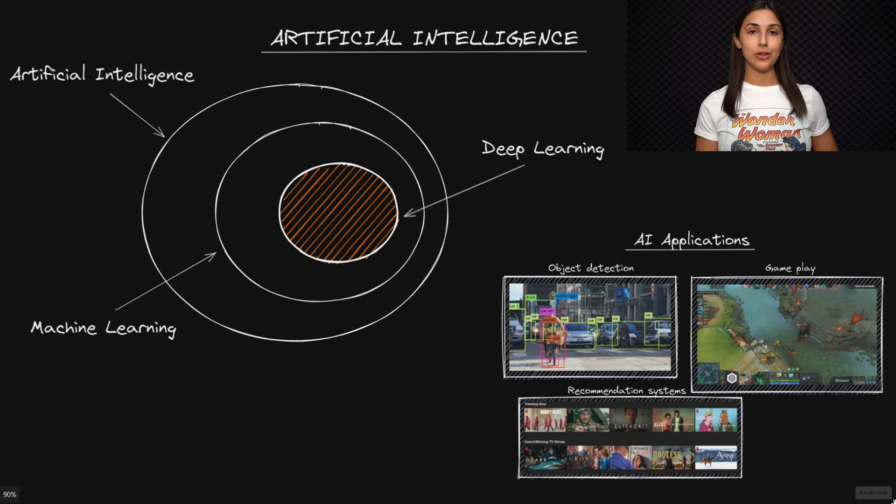Generally speaking, artificial intelligence, otherwise simply known as AI, is intelligence that is exhibited by a machine or a computer program rather than a natural biological life form. We may consider a machine or a program running inside of a machine to be artificially intelligent if it's able to perceive its environment and act accordingly in that environment in order to reach a specified goal.